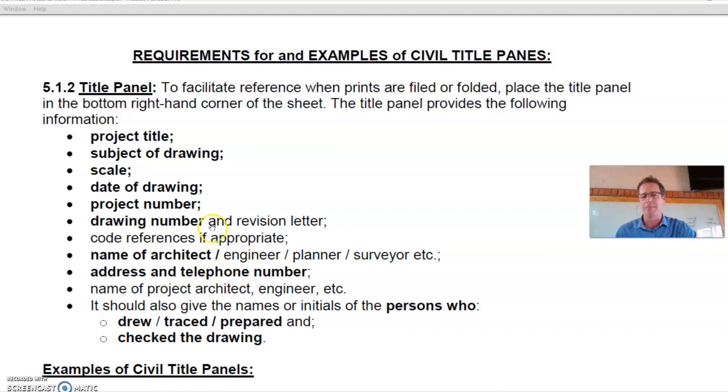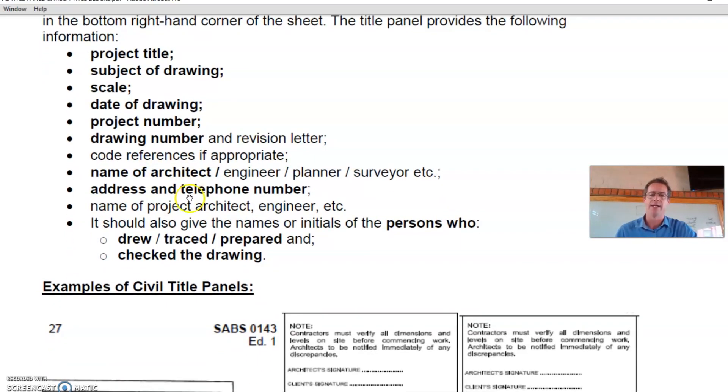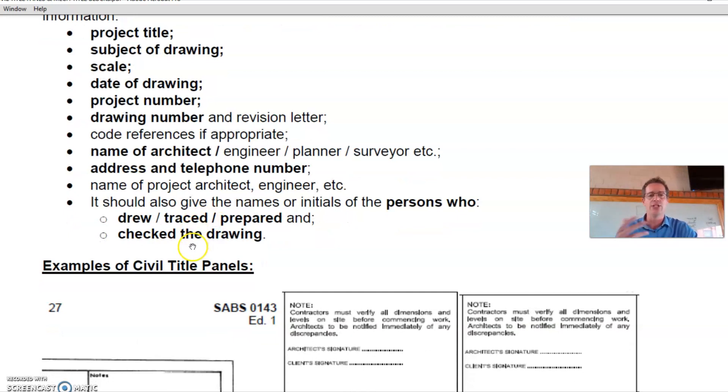You can come up with a fictitious architecture company in your name if you'd like to, but that's important—your address and your contact details. These days you can even add an email address. Name of project architect, engineer, etc.—who's the lead architect on this project? That can again be your name. It should also give the names or initials of the persons who drew the drawing, who traced or prepared it, and who checked the drawing. You can use fictitious names for yourself.